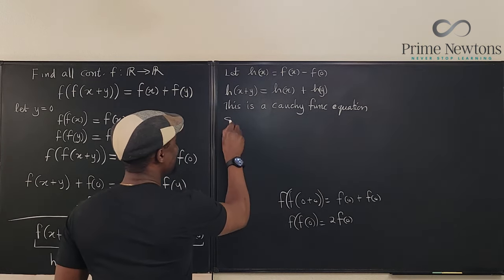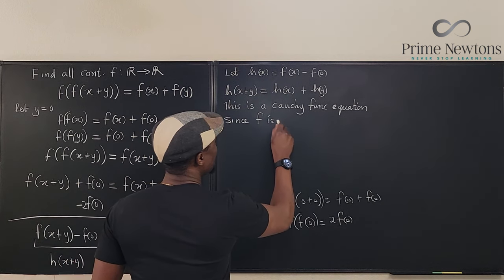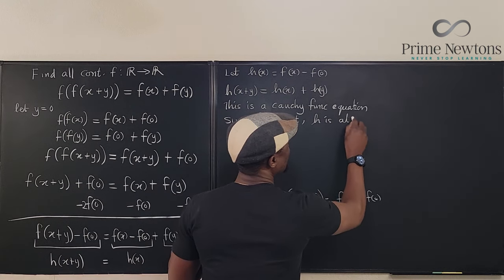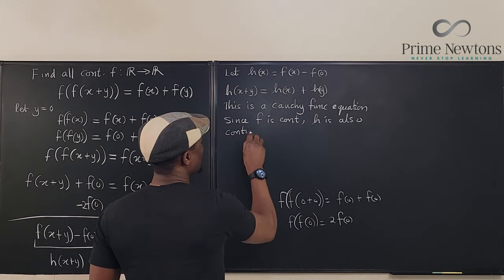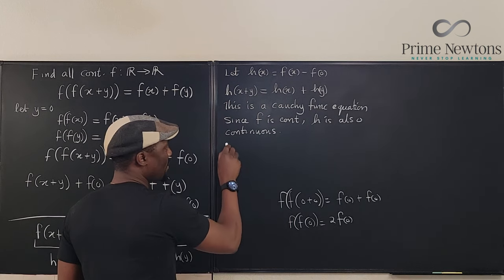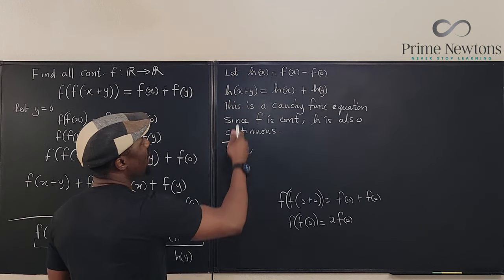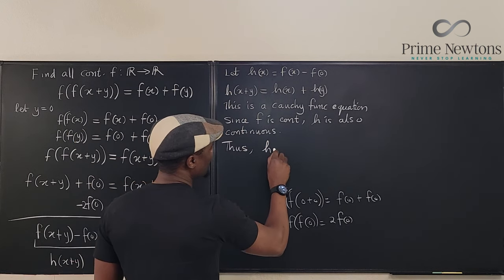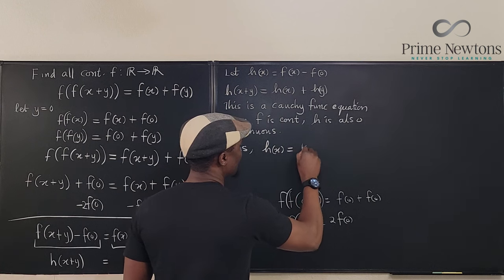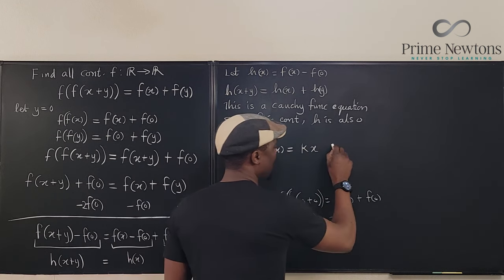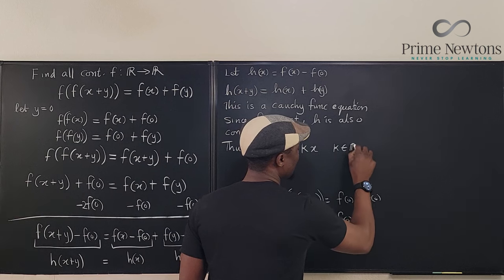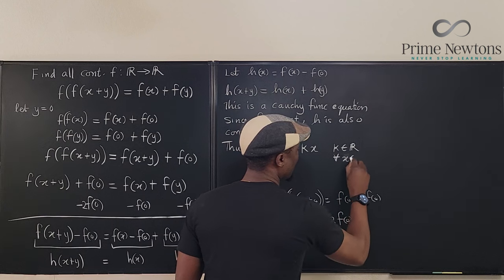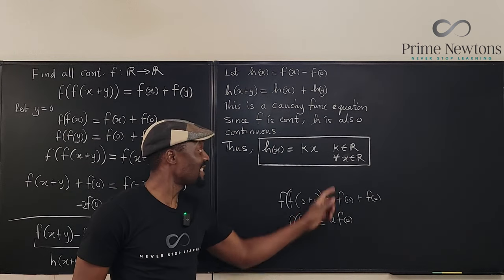Like I said, so since that means f is continuous, h is also continuous. So, we can say now that the solution to h of x can be written as kx. That's where k is real for all real x. That's it.